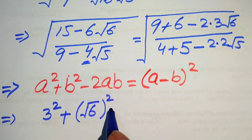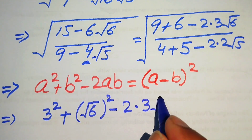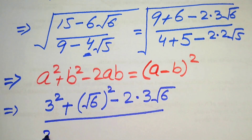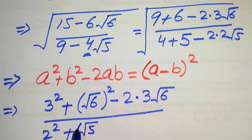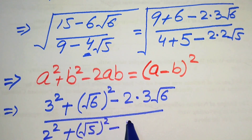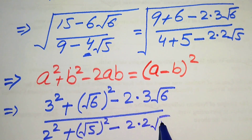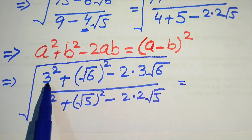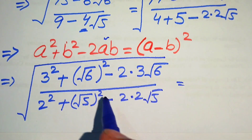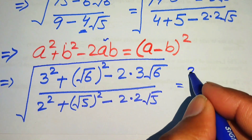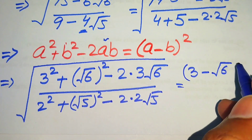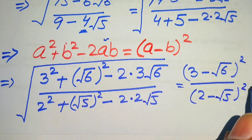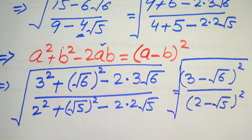We apply the identity: a² + b² − 2ab = (a − b)². We write 9 as 3 squared, and 6 as (√6)², and 2 times 3 times √6 for the cross term. In the denominator, 4 is 2 squared, 5 is (√5)², and 2 times 2 times √5 is the cross term. This gives us (3 − √6)² over (2 − √5)², all under a whole square root.